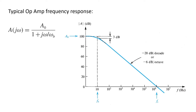Real op-amps have a gain that's not only finite, but decreases with frequency. Shown here is a typical frequency response for an op-amp. It has a large value at DC — in this case 100 dB — and then, after hitting some corner frequency labeled ωB at 10 Hz in this case, the frequency response starts to roll off at 20 dB per decade, or 6 dB per octave.